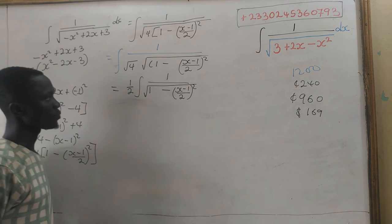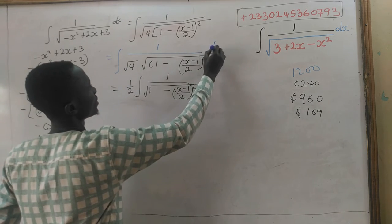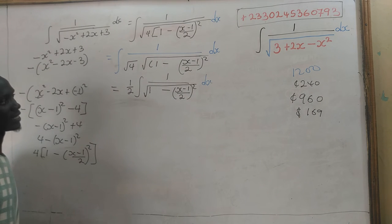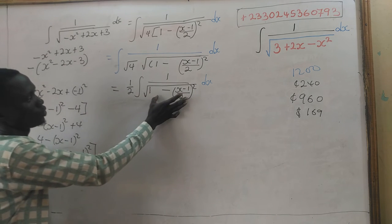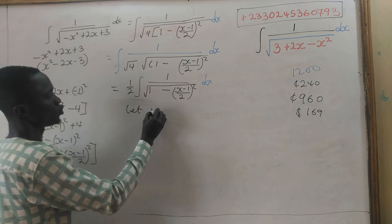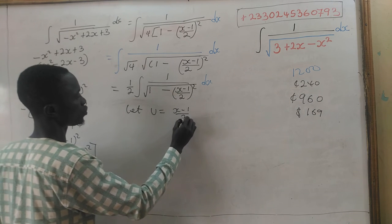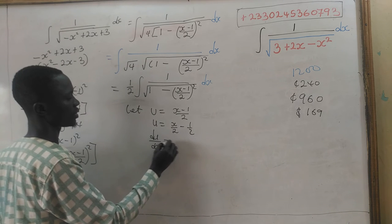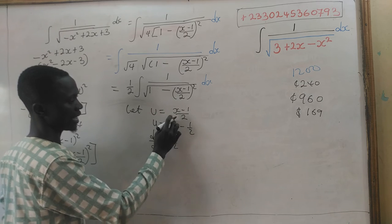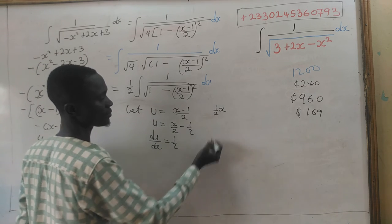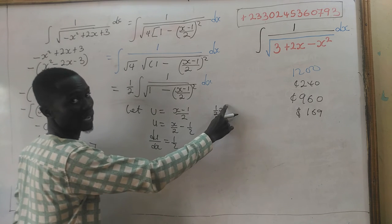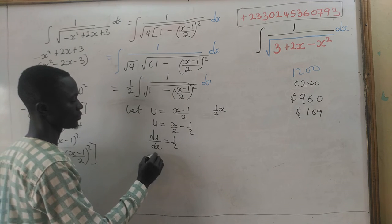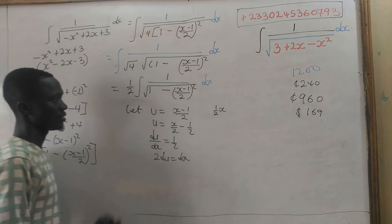We use u-substitution. Let u equal (x minus 1) divided by 2, which equals x divided by 2 minus 1 divided by 2. The derivative of u with respect to x is one-half, since differentiating x/2 gives 1/2. So dx equals 2 du.